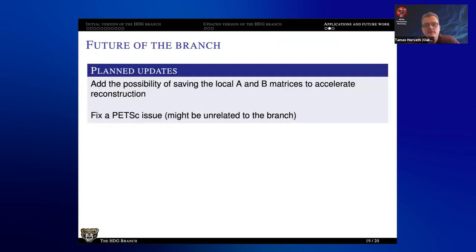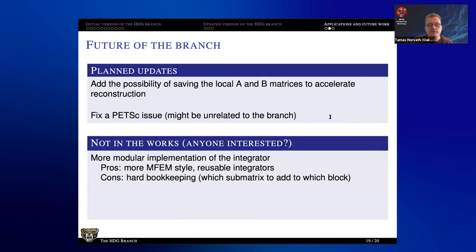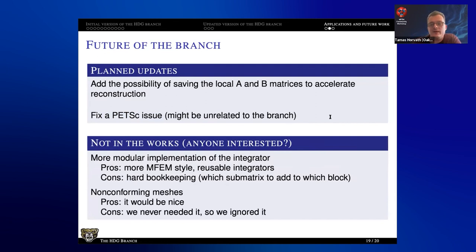About the future of the branch. In this recent update, I dropped the possibility to save A and B during the assembly and use it during the reconstruction. I do want to give that back. And I had a little bit of an issue with PETSc when I used 3.20, but when I used 3.18.6, I had no problem. So I might ask a question about that on the issue page. And things that I'm not particularly interested in doing, but maybe somebody is: you can get back to this modular approach. Reusable integrators. But the bookkeeping, I found it way too tedious and the code would be absolutely not user-friendly. But you would have the modularity. So it's up to you which one you want. And the other thing is that I am not using non-conforming meshes. I'm only using conforming meshes. Non-conforming meshes extended to that would be nice, but we never needed it. And ignorance is bliss. I did not want to struggle with that. So we dropped that. But if anybody is interested, there is something you can work on. Thank you so much.